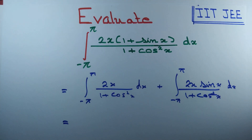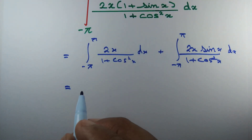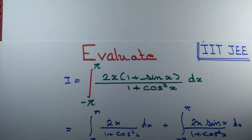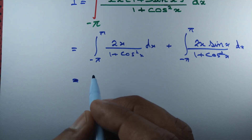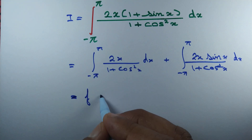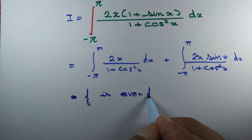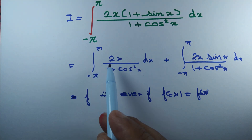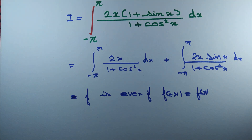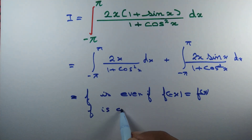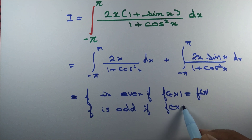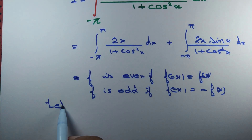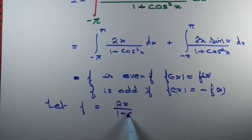Now we know something about even functions and odd functions. Let's write this integral as I — that's the integral we want to compute. A function f is even if f(−x) = f(x). If a function is even or odd, this integral becomes quite easier to compute. Let's see whether they are even or odd. Similarly, f is odd if f(−x) = −f(x). Let f equal 2x divided by (1 + cos squared x).